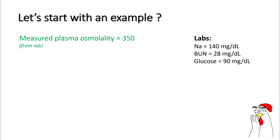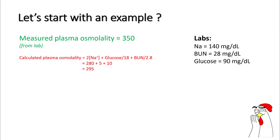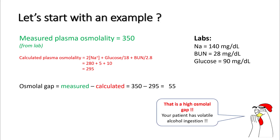So let's start with an example. You found your patient's plasma osmolality to be 350; the sodium is 140, BUN is 28, and glucose is 90. You go ahead and calculate the plasma osmolality to be 295. You find the osmolal gap to be 350 minus 295, that's 55. That's a high osmolal gap, so your patient likely has volatile alcohol ingestion.